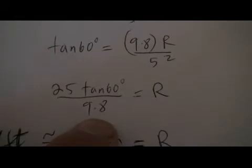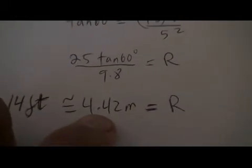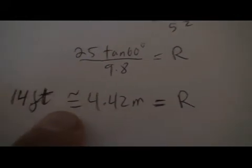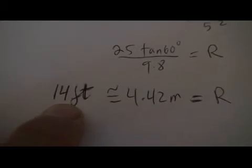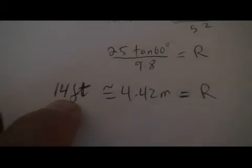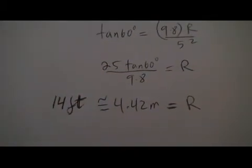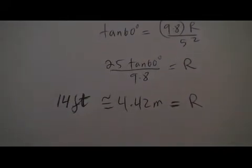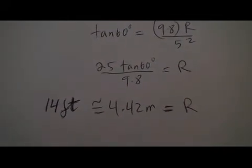25 tan 60 over 9.8, I get about 4.42 meters, which is approximately 14 feet, which is about right. The circle that I was making was about 15, 14, 10 to 15 feet roughly in that area.